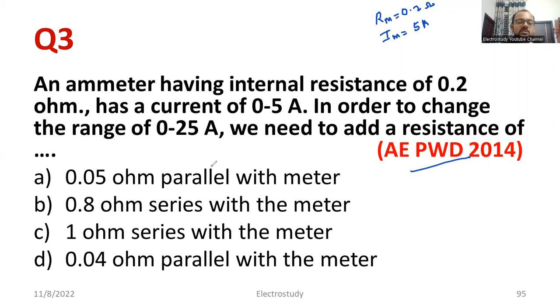In order to change the range, what is the range? 0 to 25. So maximum value of current will be how much? 0 to 25 is nothing but maximum value will be 25 absolutely. We need to add how much resistance. You need to calculate the value of shunt resistance to convert the PMMC into an ammeter. What is the formula for computing the shunt resistance? Please recall the previous video. I have already suggested at the beginning itself. RSH is nothing but RM divided by M minus 1.